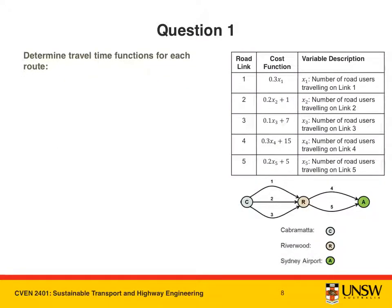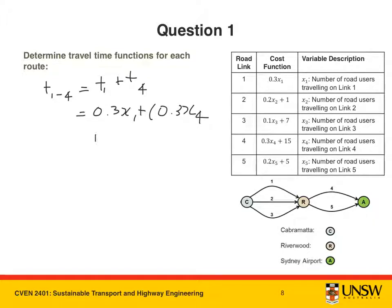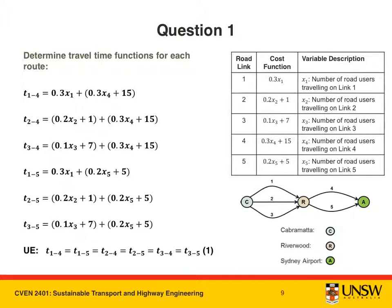In order to expand this equation we need to determine travel time functions for each route. For the route that goes through links 1 and 4, the travel time t14 is equal to the cost function for link 1 plus the cost function for link 4. Using the table on the right, this becomes 0.3x1 + 0.3x4 + 15. Applying the same procedure for the other routes yields the remaining travel time functions. The travel time on each of these routes must be equal according to the user equilibrium assignment, which we have labeled equation 1.